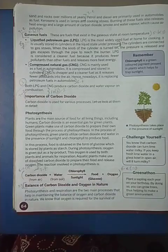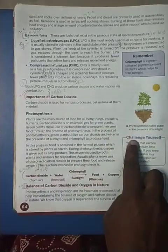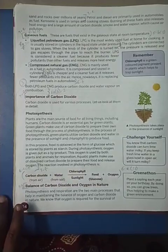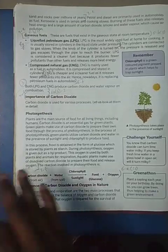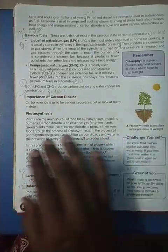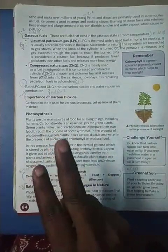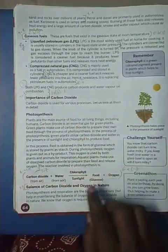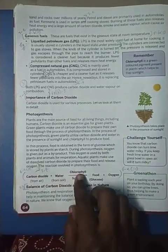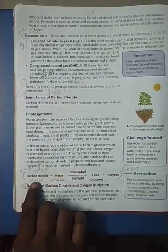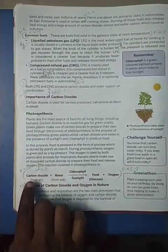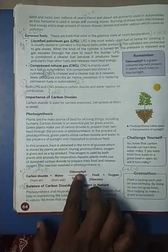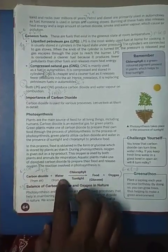We are talking only about plants, specifically green-colored leaves. The green color leaf has a pigment called chlorophyll. This chlorophyll reacts with carbon dioxide present in the air. The plant takes carbon dioxide from the air and absorbs water from the soil.